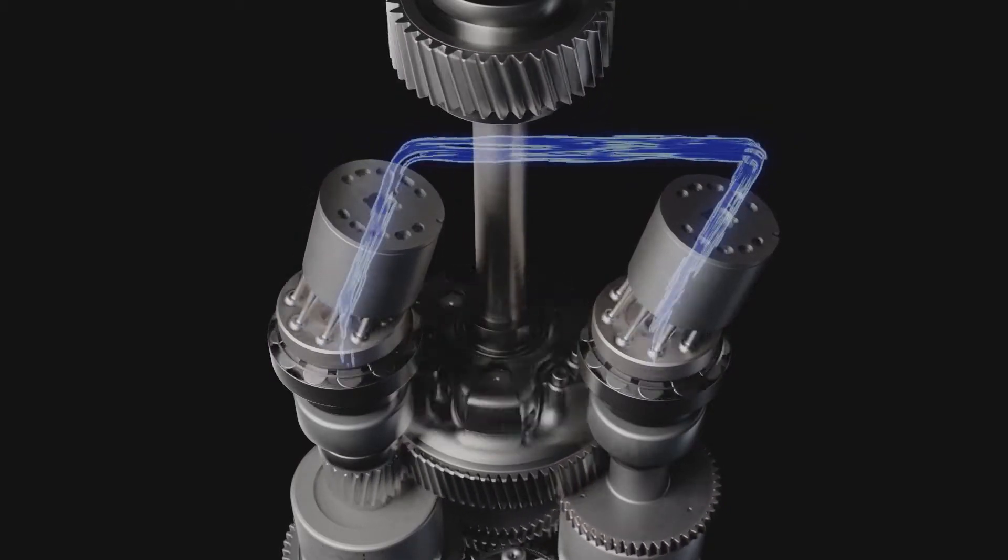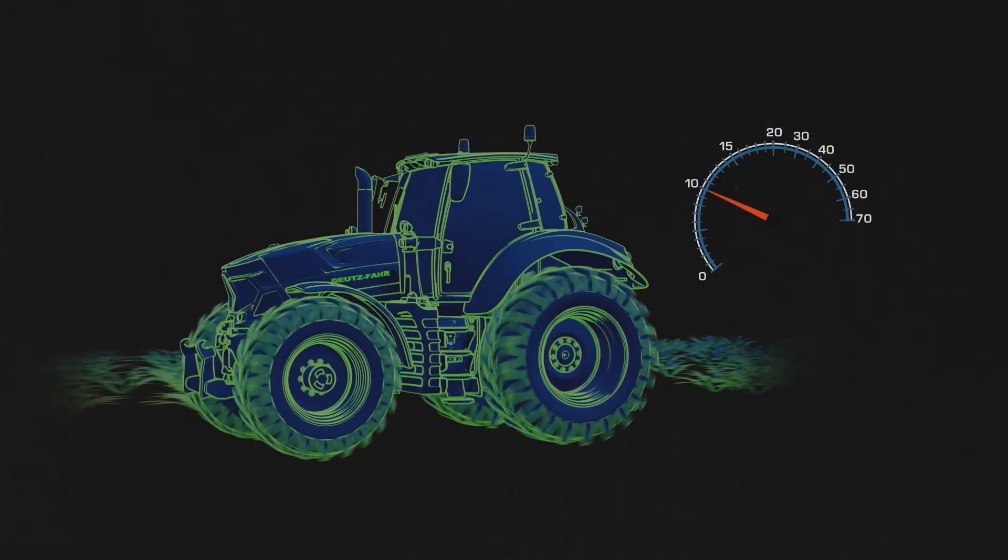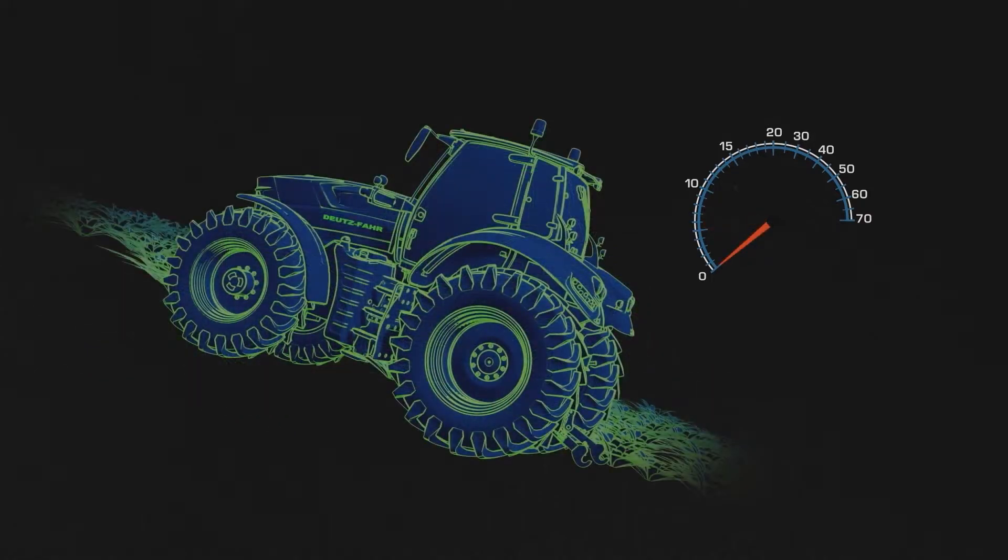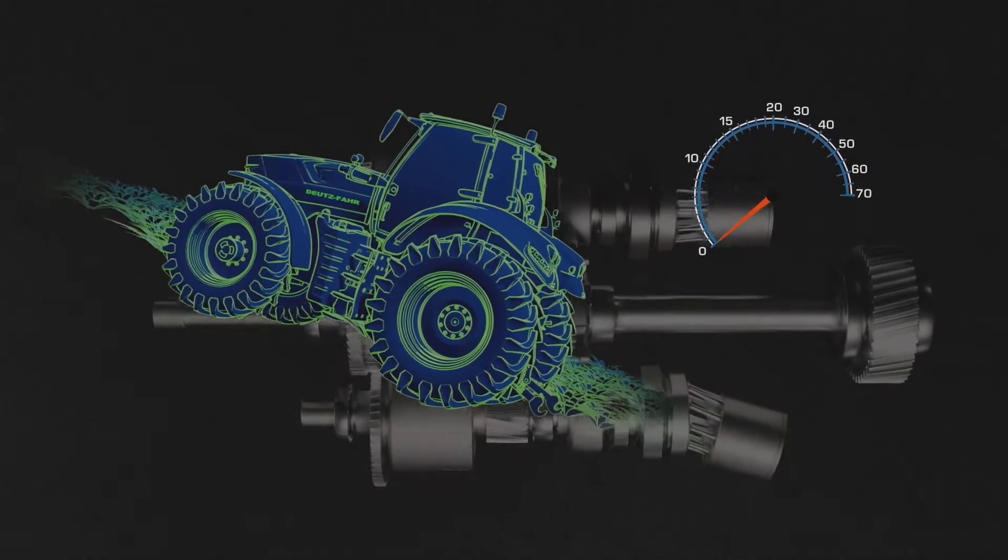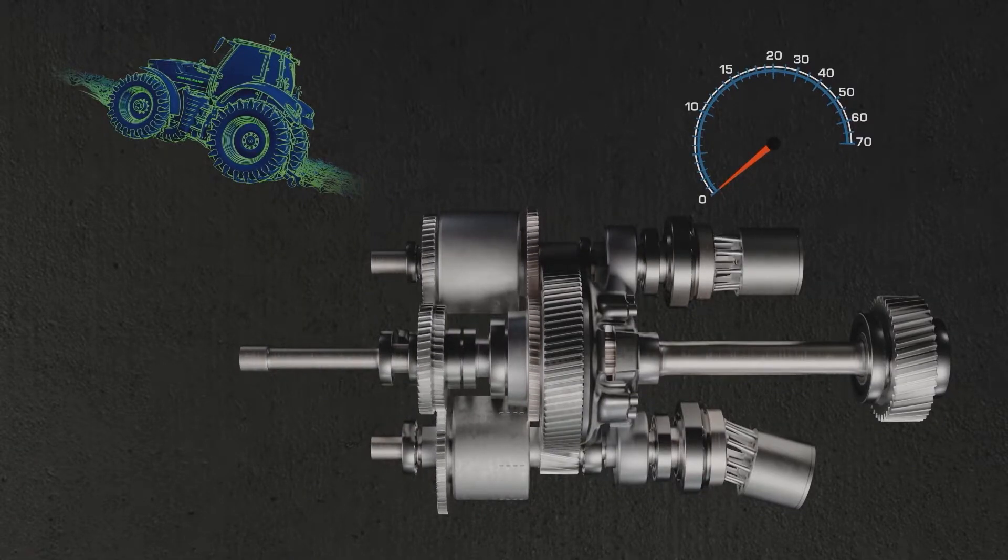But now, let's get going. As with all Deutzfahr continuously variable transmissions, the new TTV offers the power zero function. Here, the tractor is kept at an active standstill after the direction of travel has been preselected, without any action on your part.